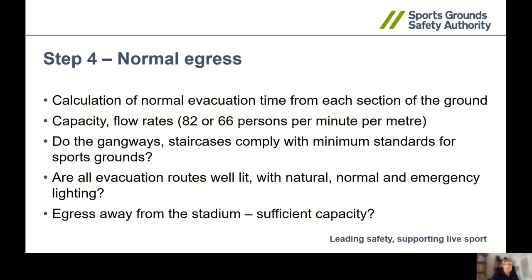Step four is your normal egress. This is the time based on people not getting agitated. We set it at eight minutes — research in the early 70s indicated that after seven and a half minutes people do get agitated when queueing. So we set a normal egress time of eight minutes. That's not leaving the entire stadium — that is just leaving the area to a free-flowing exit system, which is usually the vomitory or outside the ground. The flow rates are 82 people per minute per metre on flats and 66 people per minute per metre on stairs. So if your vomitory was a metre wide, you would multiply 66 by your eight minutes by your metre, and that would give you the number of people that could reach that vomitory within eight minutes.